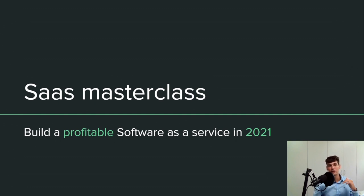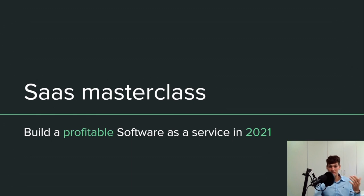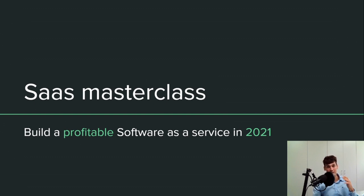In case you wanted to start your own profitable software as a service in 2021, you need to be aware of so many things — such as what to start between a B2B versus a B2C, or vertical versus a horizontal SaaS. You will understand what I think is the best thing to do in terms of choosing whether the vertical or the horizontal one, based on my experience.